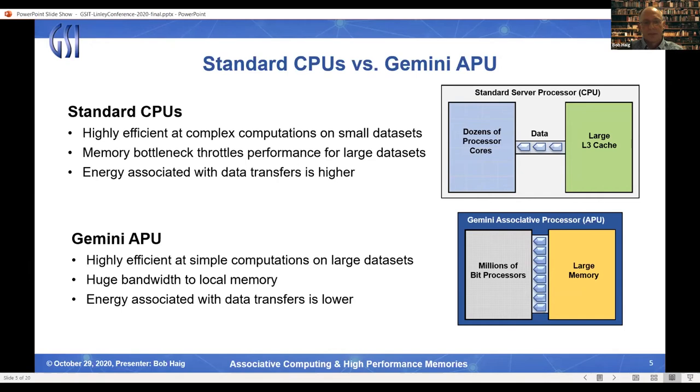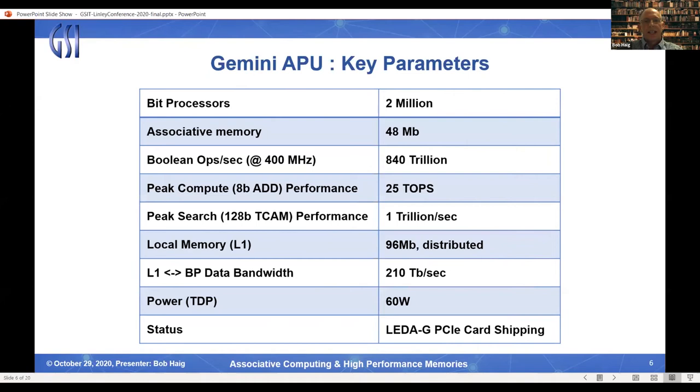We refer to the device as an associative processor because data elements in the bit processor's computational memory are accessible by content as well as by address. This makes them well-suited to exact and similarity search applications and other applications that involve relatively simple computations on large data sets. Our initial associative processor is called Gemini. It has 2 million bit processors comprising 48 megabit of associative memory, which can perform 840 trillion Boolean operations per second at 400 megahertz. Peak compute performance for 8-bit integer add, for example, is 25 teraops per second. And peak 128-bit TCAM search performance is 1 trillion searches per second. The Gemini APU has 96 megabits of distributed local memory that is tightly coupled to its bit processors, which we refer to as L1. The L1 to bit processor data bandwidth is 210 terabits per second for the chip. Typical thermal design power is only 60 watts, although it varies depending on the application. The Gemini APU is mounted on a standard PCI card we call LITA-G and is currently shipping.